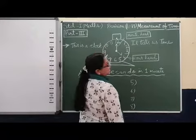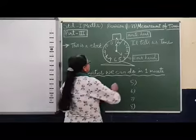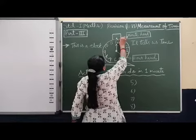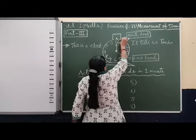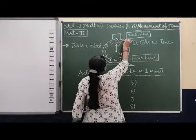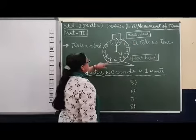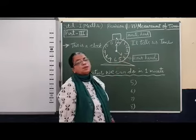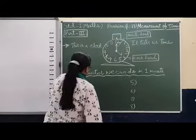But one minute means here you can see one, two, three, four, five. This way one, two, three, four, and then five. Nearby one it is five minutes. So one minute means this is here. It will come here in one minute. We can do, what are the activities?